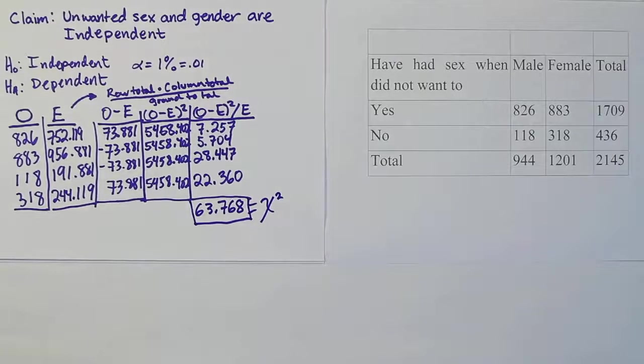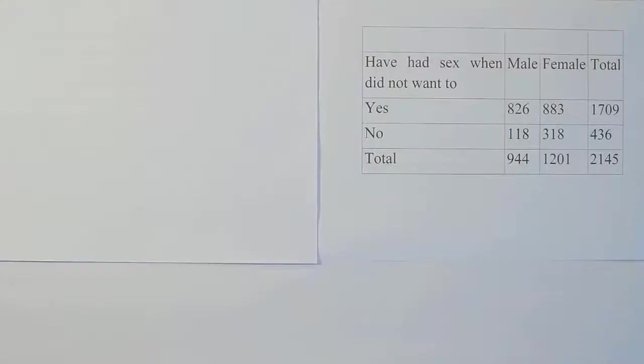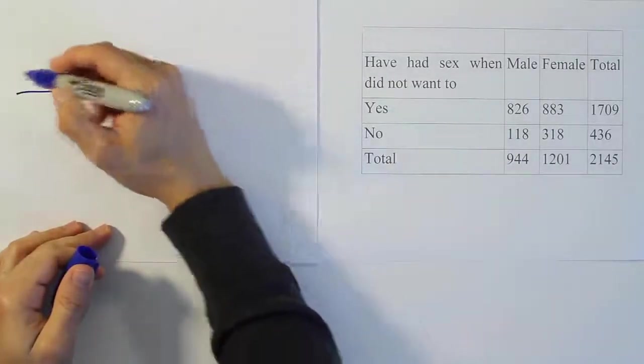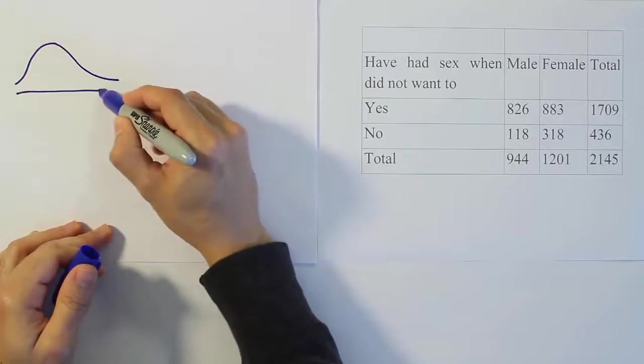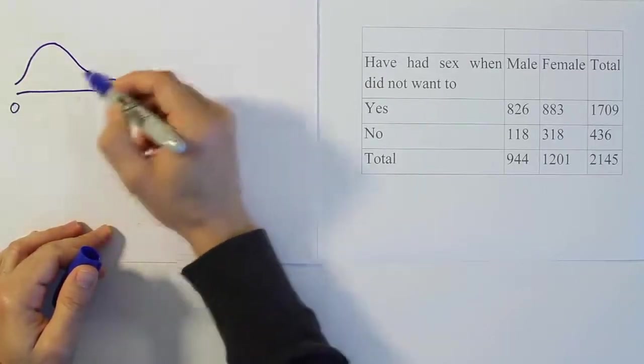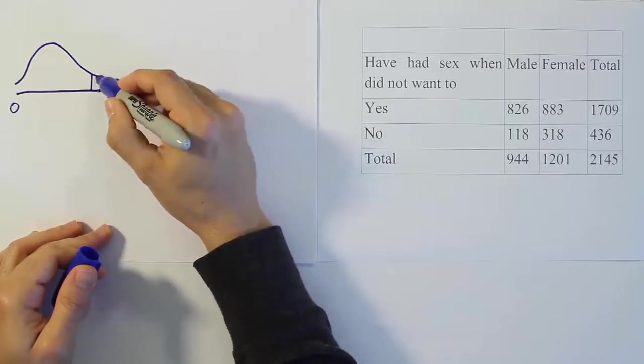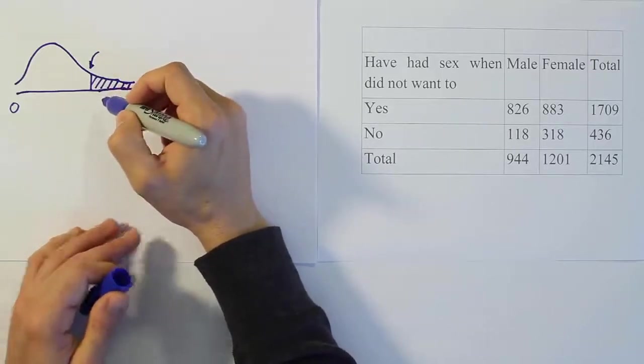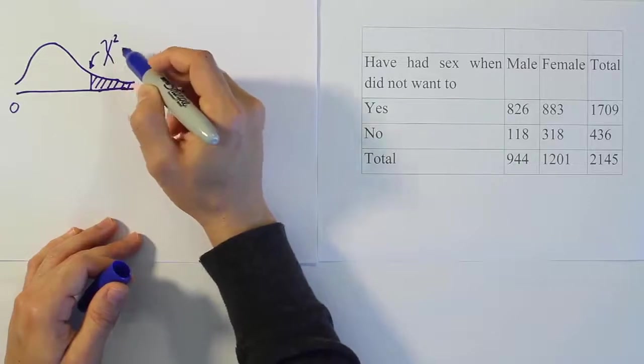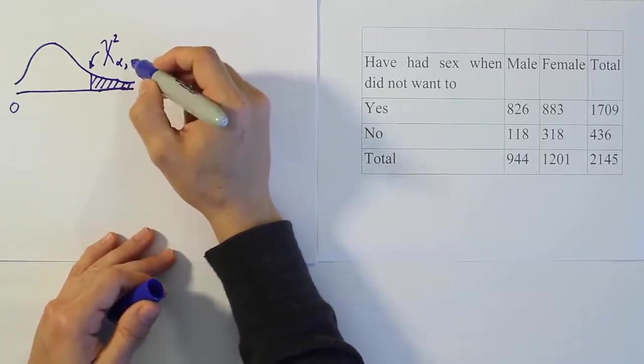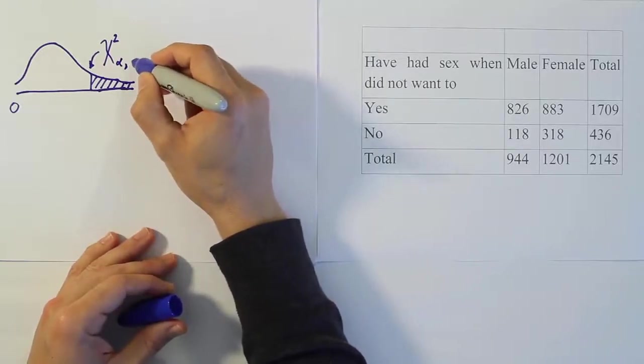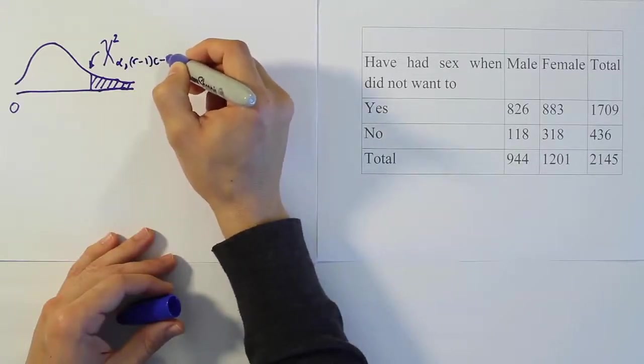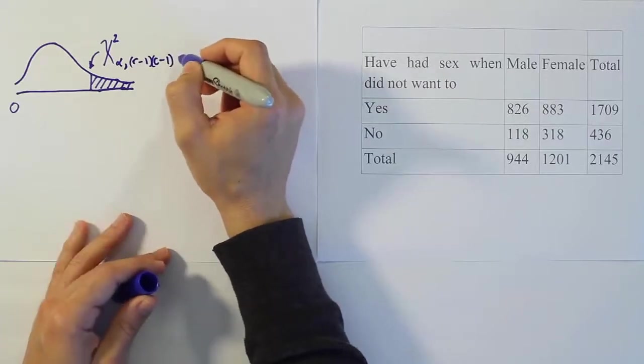Now that we have the test statistic, let's get our critical value so we can compare our test stat against that critical value. Our curve looks kind of like an F-statistic curve. Its long right tail on the right-hand side is our rejection region. We're looking for the critical value that begins the rejection region. The chi-squared test stat is going to be using alpha, and the degrees of freedom is going to be the number of rows minus 1 times the number of columns minus 1 multiplied together.